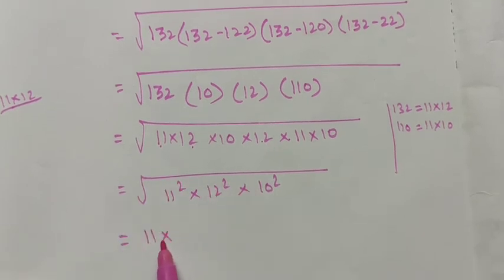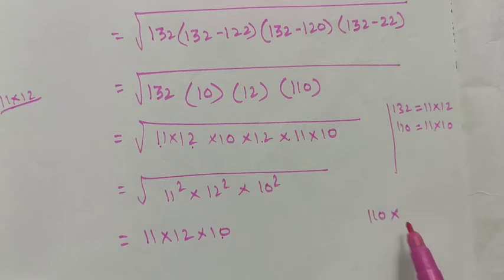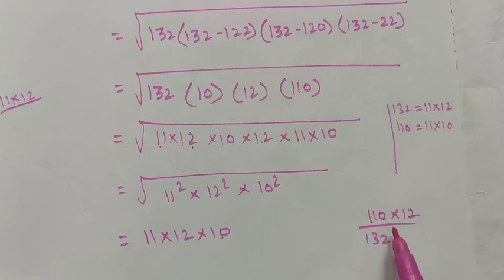10 into 11 is 110, into 12 is 1320. So the area of the triangle is 1320 meters square. Now we want to find out the cost of leveling the ground.